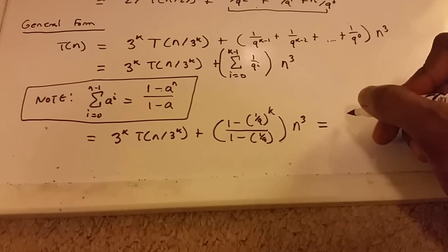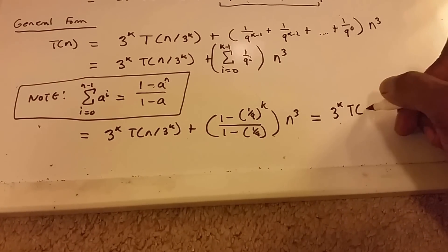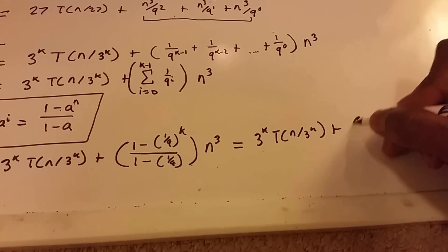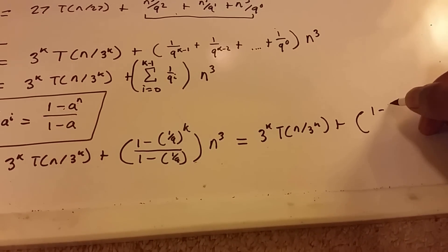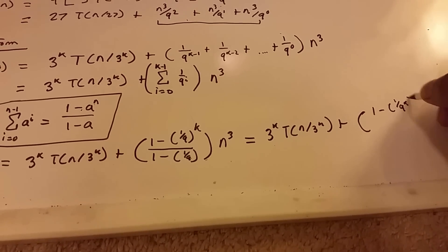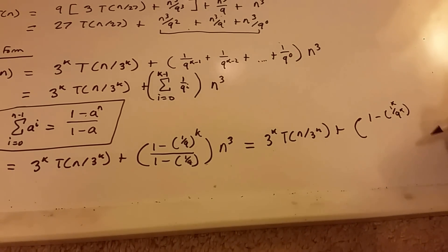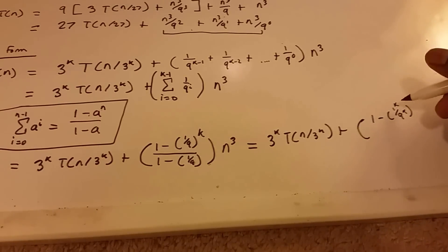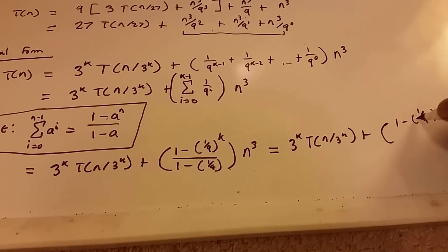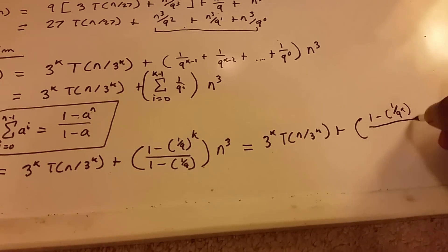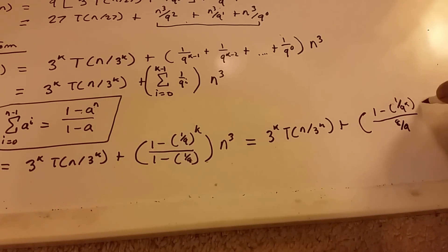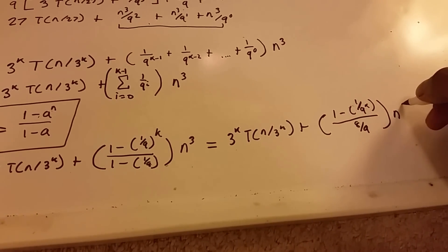Simplifying: we get 3 to the k times T of n divided by 3 to the k, plus 1 minus 1 divided by 9 to the k. Since 1 to any power is 1, we simplify further. Then 1 divided by (1 minus 1/9) is 1 over 8/9, which equals 9/8. All of this is times n cubed.